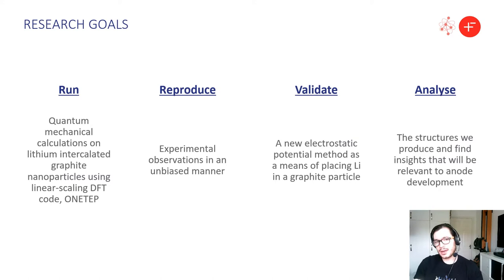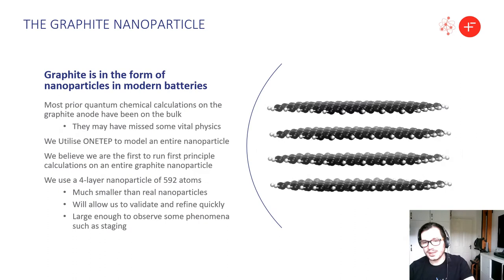We also want to validate a new electrostatic potential method whereby we place lithiums into the graphite nanoparticle. We'll talk about this a bit later on and then finally we want to analyze the structures that we produce and find insights that may be relevant to anode development.